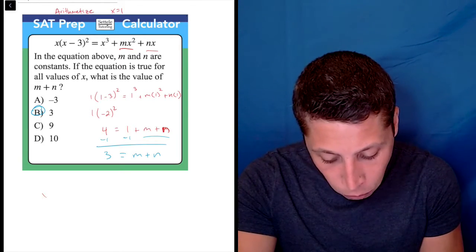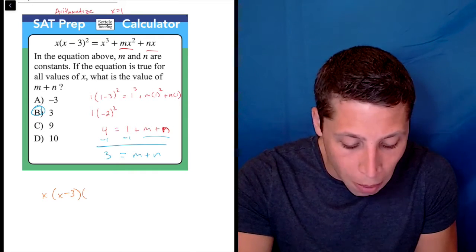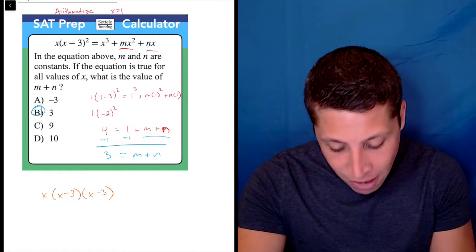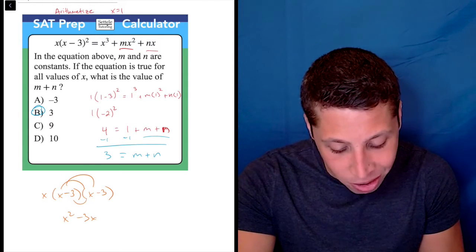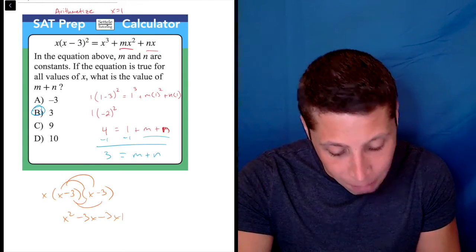In this case, I would first FOIL the (x - 3)s. You might be able to do that in your head, but just to play it safe: x² - 3x - 3x + 9.